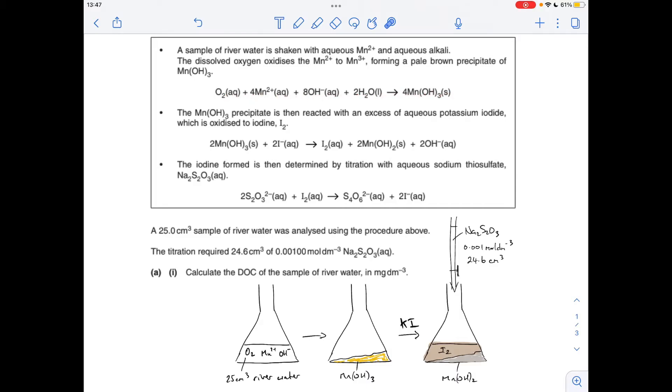Obviously that's the equation that goes with that. They've then reacted it with an excess of KI, and that's turned the Mn(OH)₃ into Mn(OH)₂, so it's still got precipitate, but it's generated aqueous iodine, which is then determined by titrating with sodium thiosulfate of that concentration.